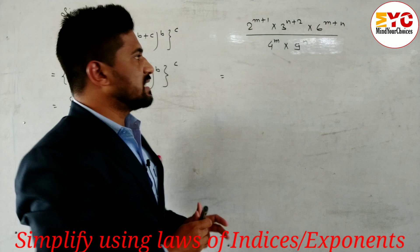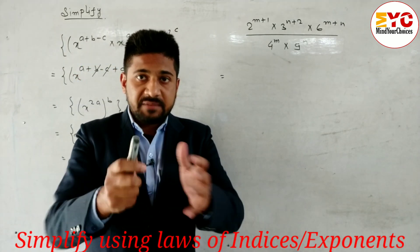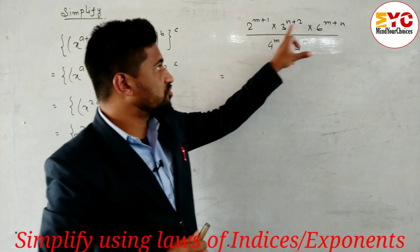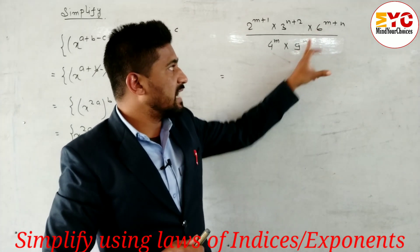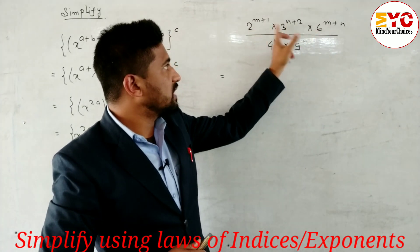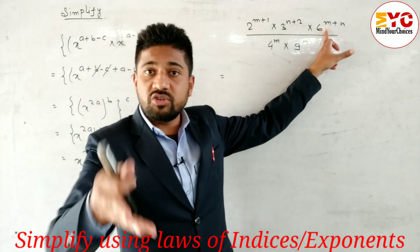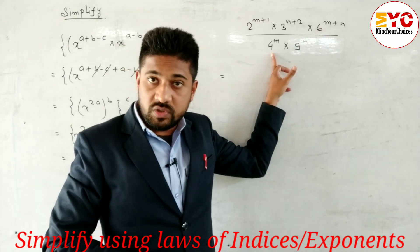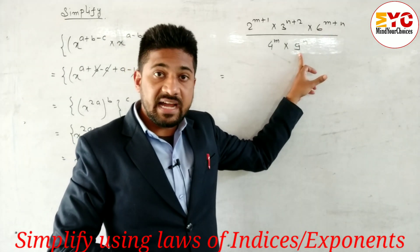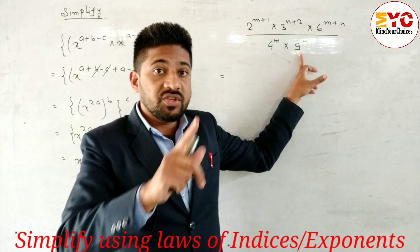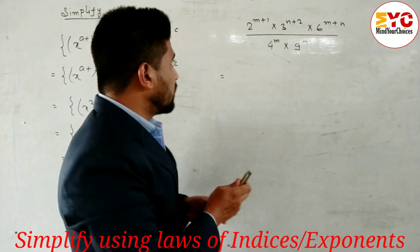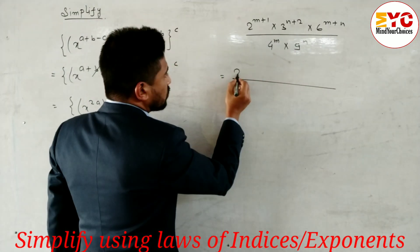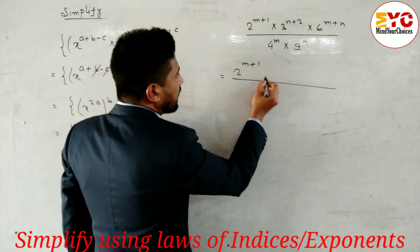Here you can see the bases are not the same, so we have to make the bases the same. Here we have 2, 3, 6, 4, and 9. We cannot convert 6 directly, but 6 means 2 × 3. In the place of 4 we can write 2², and similarly in the place of 9 we can write 3². This way we can make the bases the same.